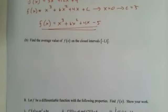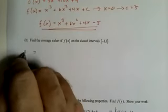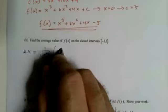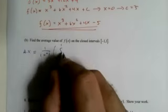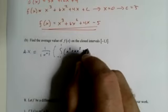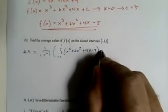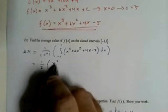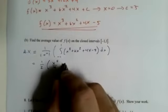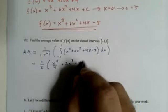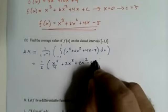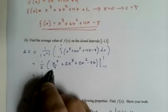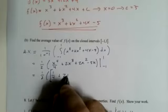Find the average value of f of x on the closed intervals, negative 1 to 1. All right, that equals 1 over 1 minus negative 1 times the integral, negative 1 to 1 of this monster equation, x to the third plus 6x squared plus 4x minus 5. This, you would not see on an actual exam because it's too much. 1 half, x to the fourth over 4 plus 6 to the third over 3, 2x to the third, x squared over 2, 2x squared minus 5x.